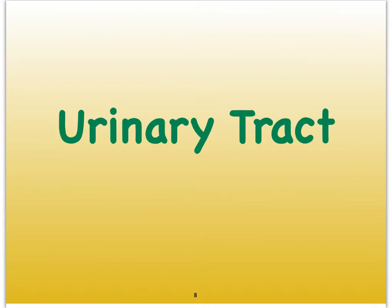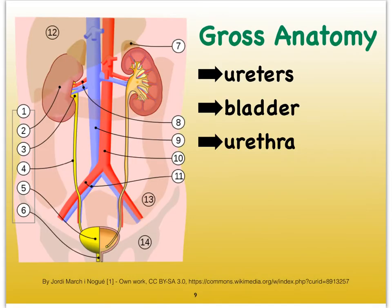If we focus on the urinary tract of the urinary system, it does not include the kidneys. It includes the ureters — there's one ureter per kidney — and each ureter guides the urine produced by the kidneys to a storage unit we call the bladder. Leaving the bladder, we have the urethra.